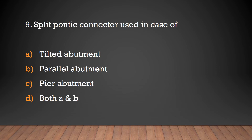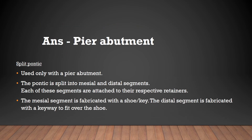Split pontic connectors are used in the case of: tilted abutment, parallel abutment, pier abutment, or both A and B? The answer is pier abutment. Split pontic connectors are used only with pier abutment. The pontic is split into mesial and distal segments, each attached to their respective retainers. The mesial segment is fabricated with a shoe and key, and the distal segment is fabricated with a keyway to fit over the shoe.